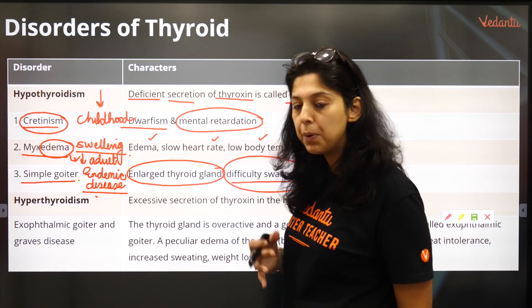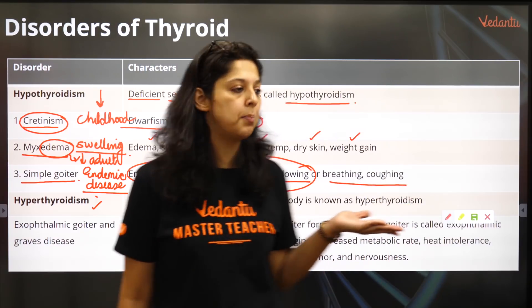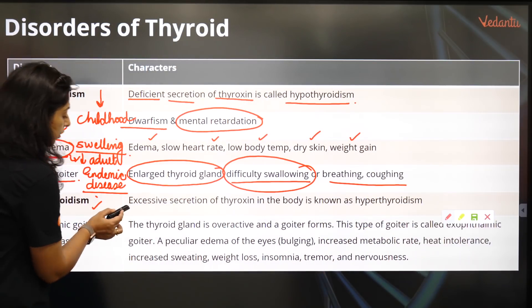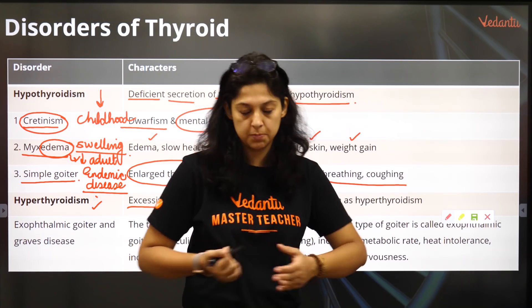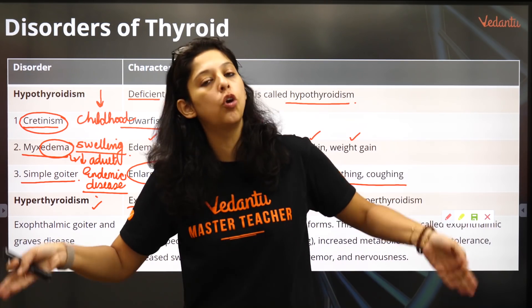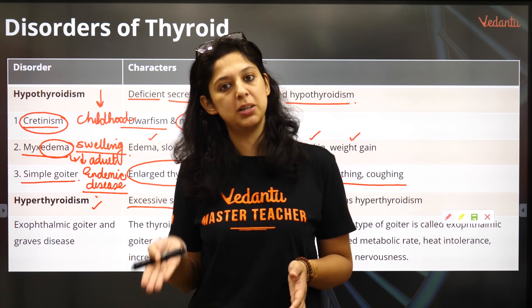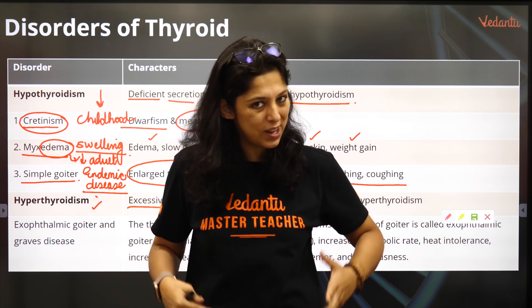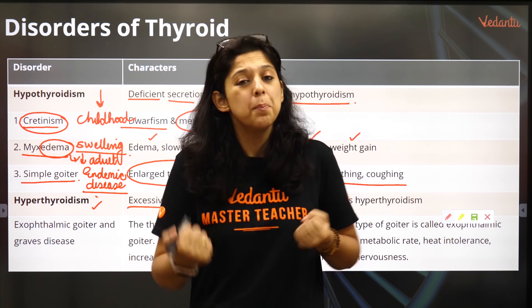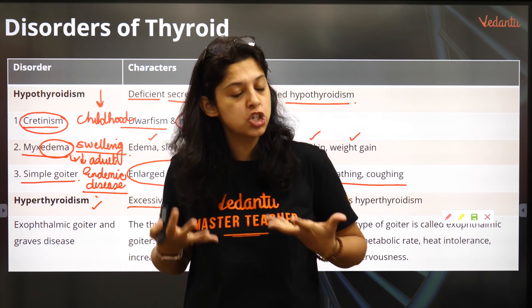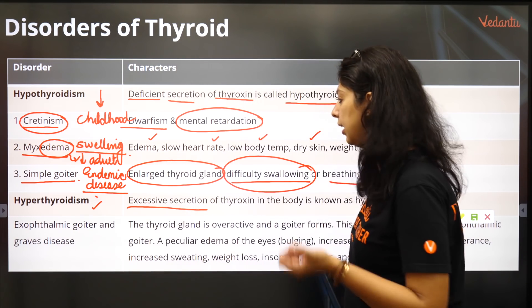Now let's come to hyperthyroidism. Hyperthyroidism is an increase in the amount of thyroid hormones — there is excessive secretion of thyroxin in the body. The person in spite of eating a lot is very thin. The heart rate goes up, the metabolism of the body goes up, the person sweats more and gets agitated very easily. The person becomes very agitated, the energy level in the body is very high, and they become very sweaty.